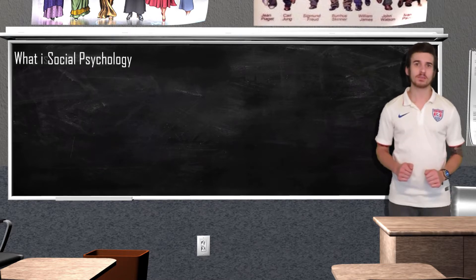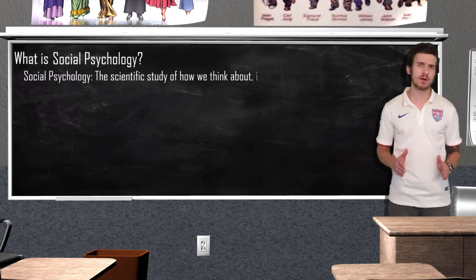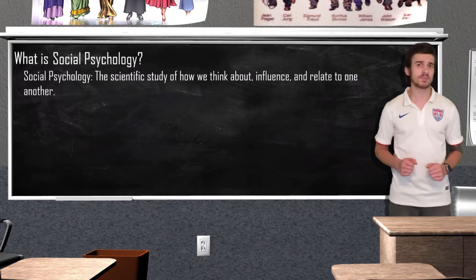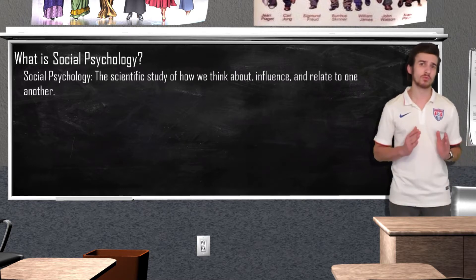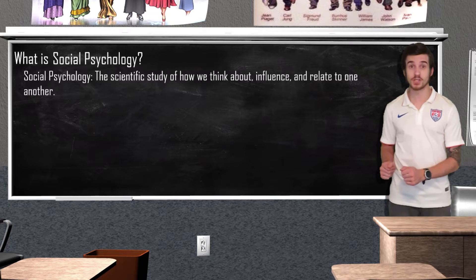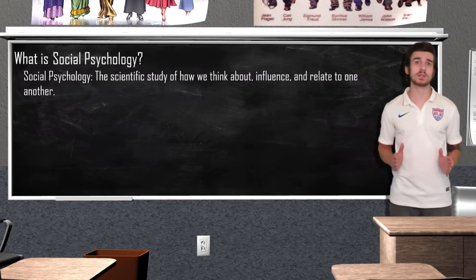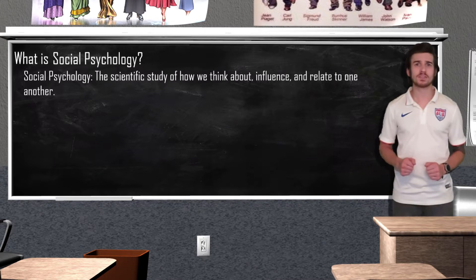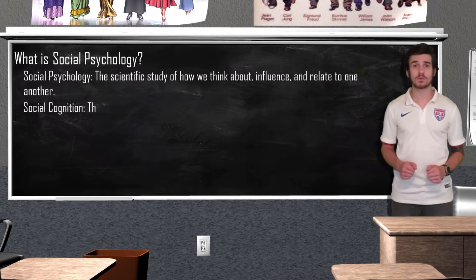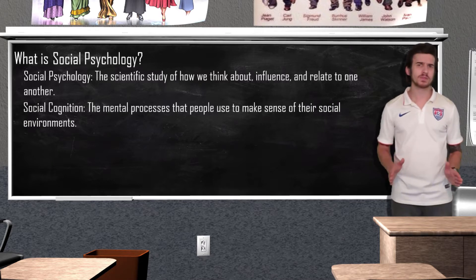What exactly is social psychology? Social psychology is the scientific study of how we think about, influence, and relate to one another. Social psychologists focus on how the group influences our individual behavior. It is important that we do not confuse social psychology with sociology. A sociologist focuses on society as a whole and studies patterns of group behaviors, while a social psychologist looks at how these influences affect individual behavior. A social psychologist may study how a certain person acts differently in different situations. Social cognition refers to the mental processes that people use to make sense of their social environment.